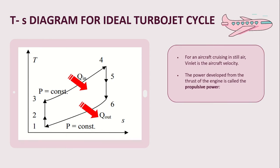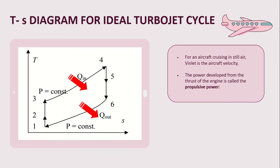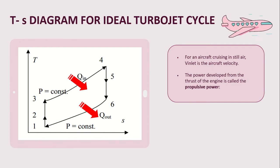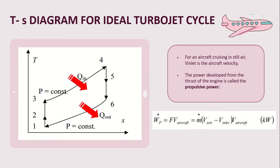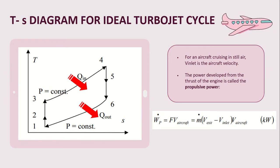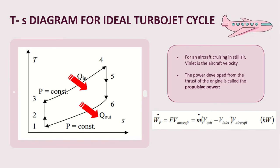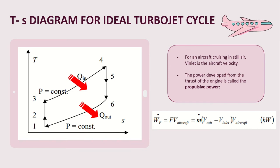For an aircraft cruising in still air, V_inlet is the aircraft velocity. The power developed from the thrust of the engine is called the propulsive power, defined by the formula: P = F × V_aircraft = mass flow rate × (V_exit − V_inlet) × V_aircraft. The unit for propulsive power is kilowatts.